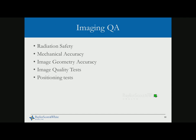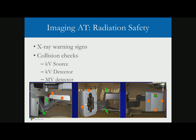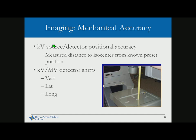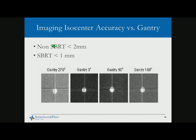Imaging QA is now part of all LINAC acceptance testing. We need to test KV source interlocks — if there is a collision it needs to stop — and MV source, MV detector, and KV detector collision checks, along with X-ray warning signs. Mechanical accuracy of KV source and detector positional accuracy are important: if the detector is in a different location and you use a digital graticule, you won't have the right magnification. It's critical to test detector position and measure from the isocenter.